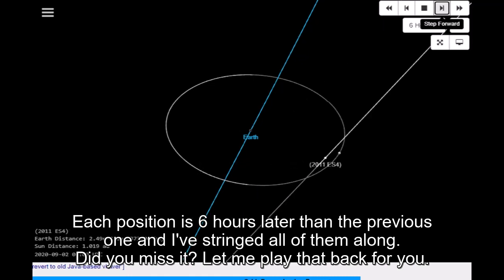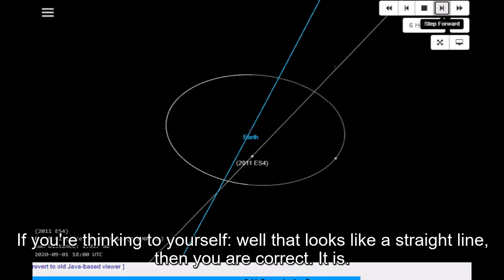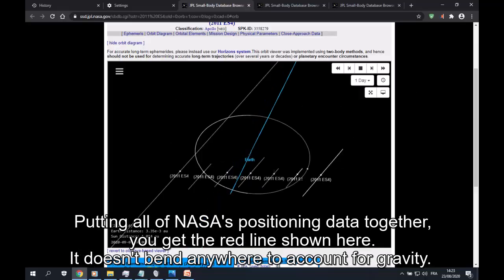Each position is 6 hours later than the previous one and I've stringed all of them along. Did you miss it? Let me play that back for you. If you're thinking to yourself, well that looks like a straight line, then you are correct. It is. Putting all of NASA's positioning data together, you get the red line shown here.